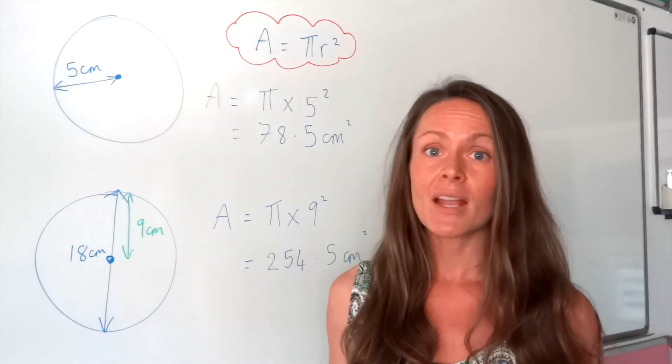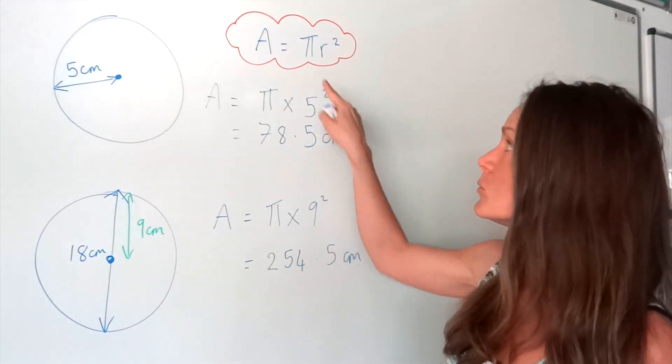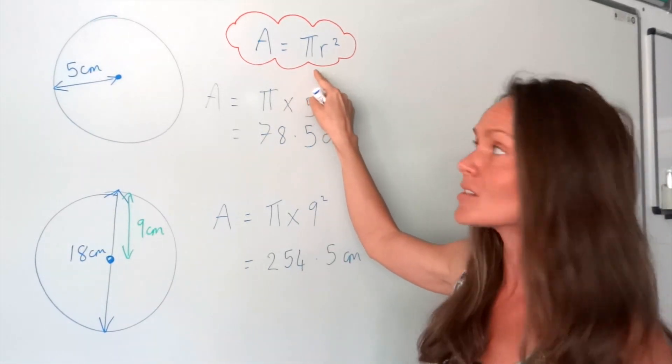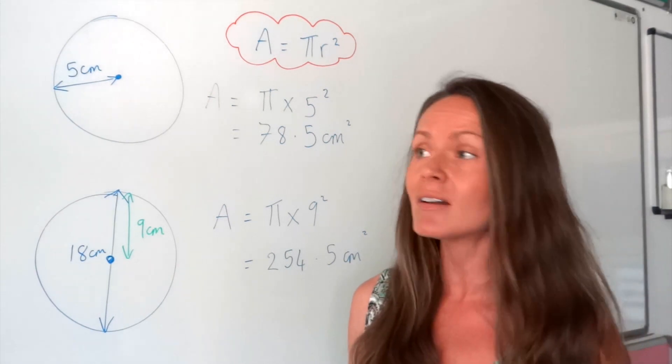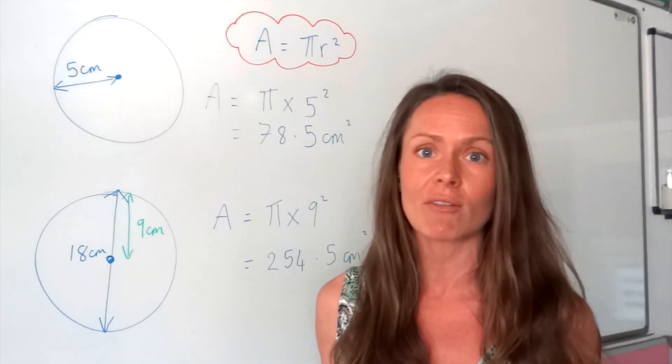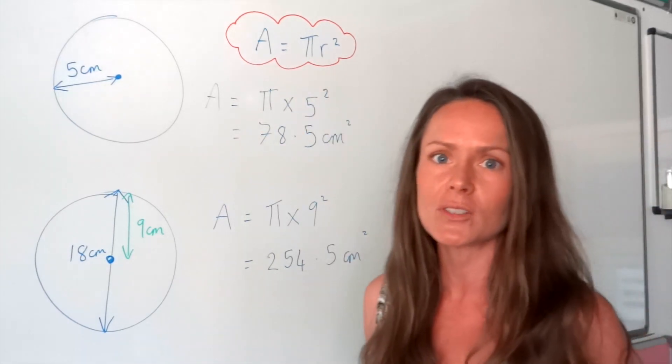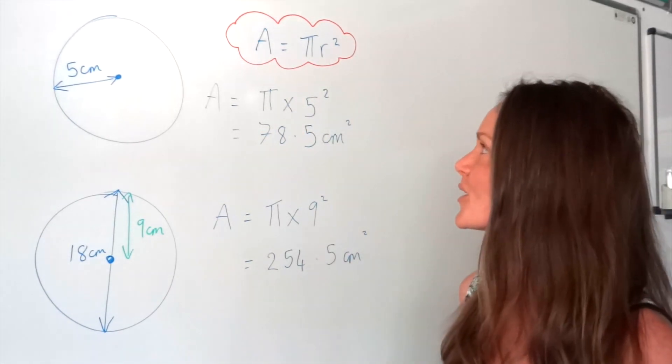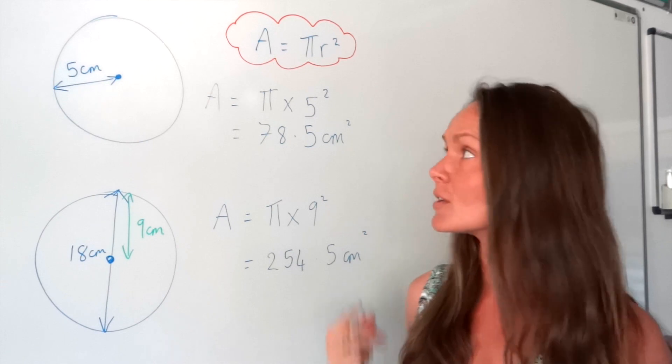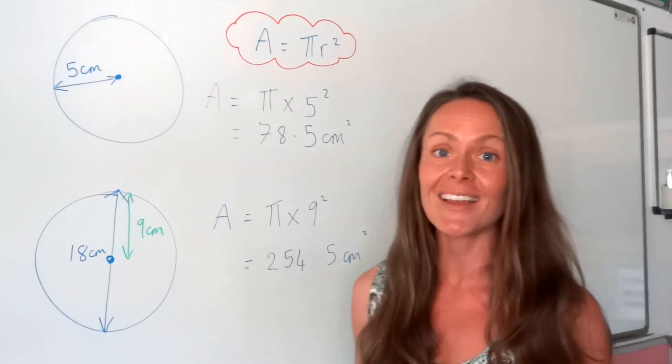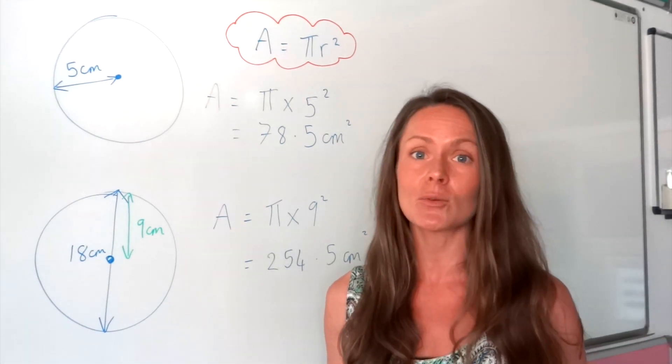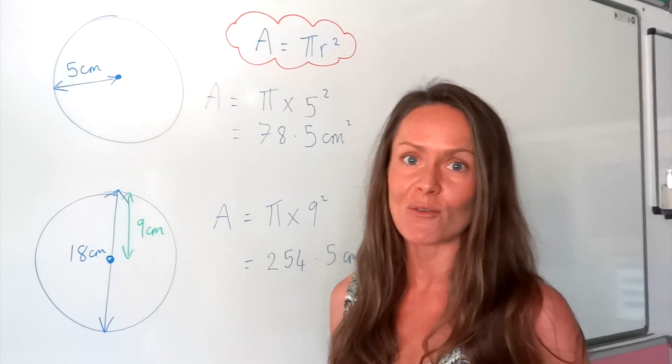So that's area of a circle. Some exam boards expect you to memorise this. So some of you will have to learn that off by heart. Even if you don't need to with your exam board, I still think it's a good idea to learn this one. It's not too difficult to remember. And you'll become much quicker at the questions if you know it off by heart. In my next video, I'm going to cover finding the circumference of a circle.